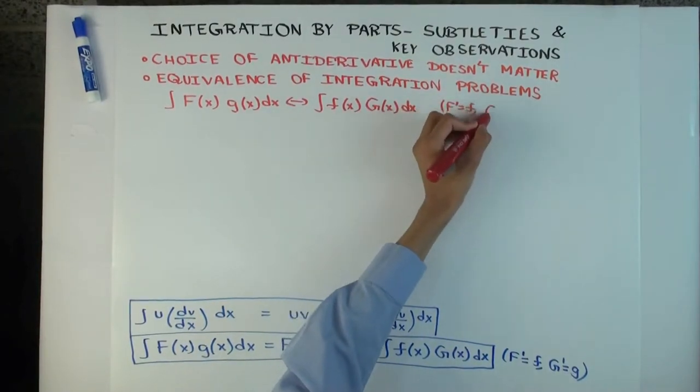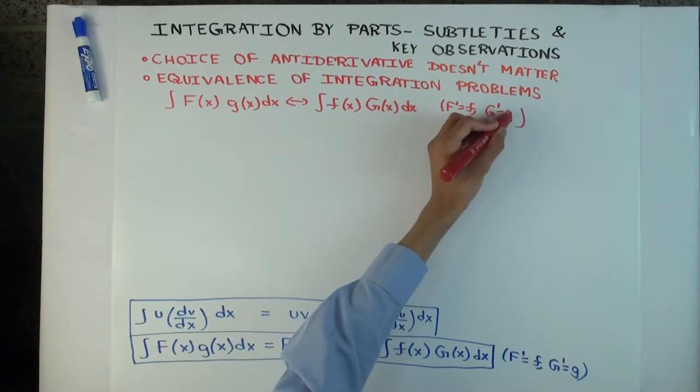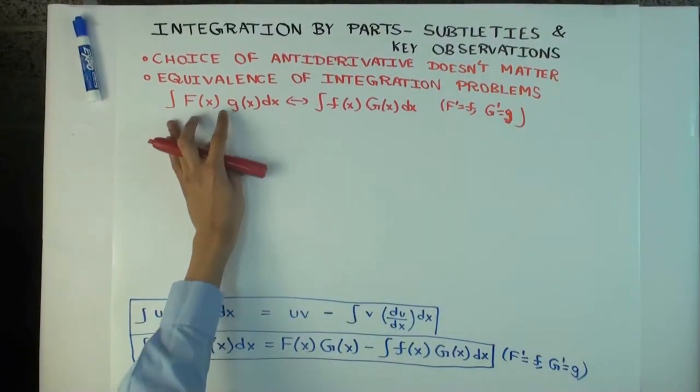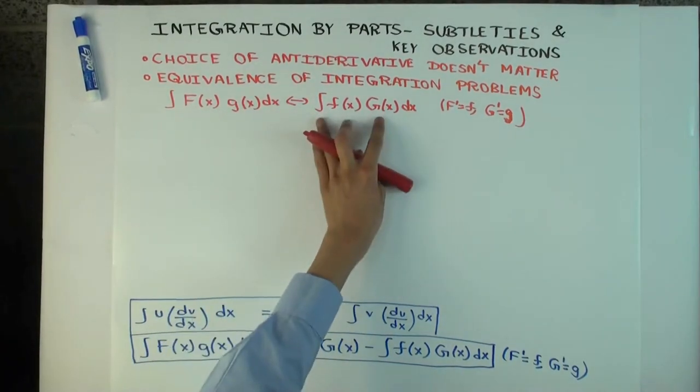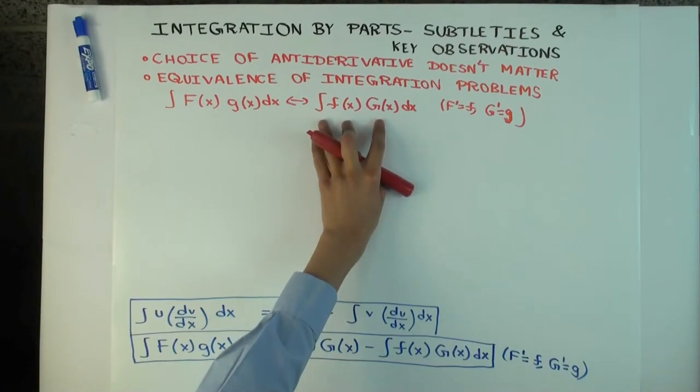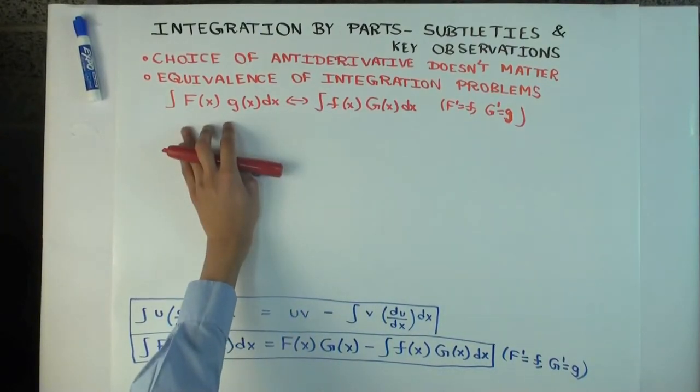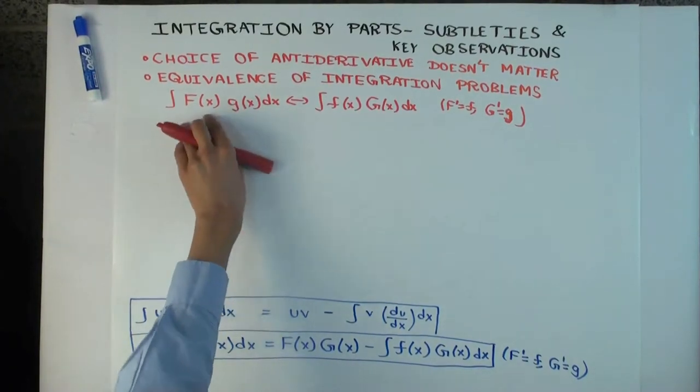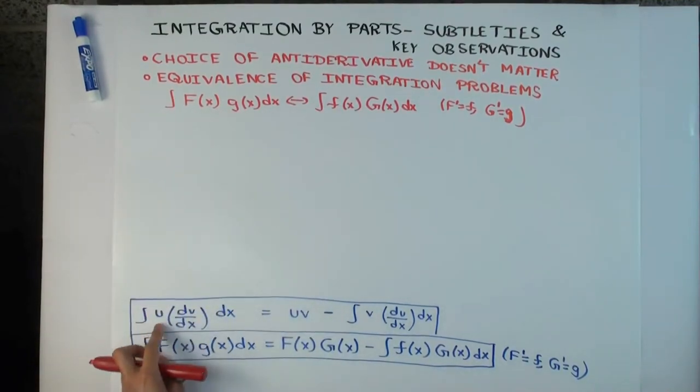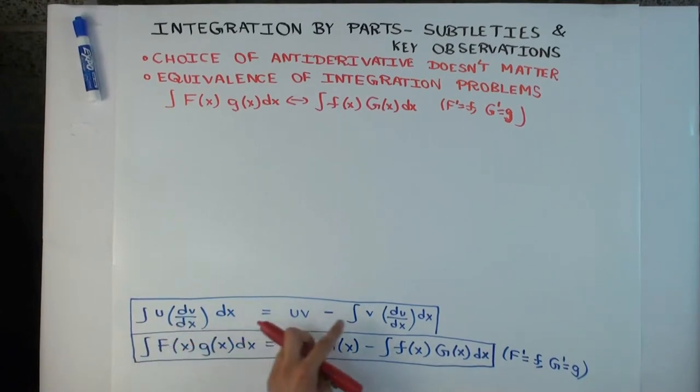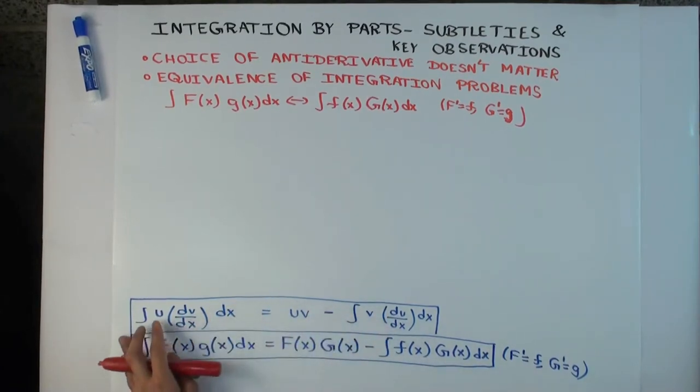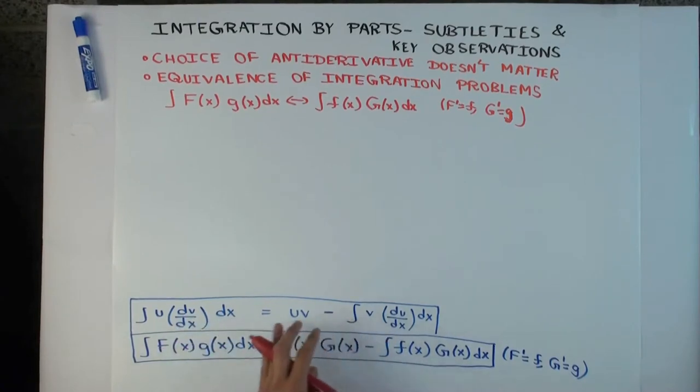Okay. So what it's saying is that if you want to integrate a product of two functions, you can integrate a new product. What change have we made? What has this new product different from the old one? You differentiate one and integrate the other. Yeah, I've differentiated this capital F and integrated little g. If you want, you can also see the uv notation. It's still a little clearer here. The original integral, integrand is u times dv/dx, the new integrand is v times du/dx. So I have differentiated u and integrated dv/dx.